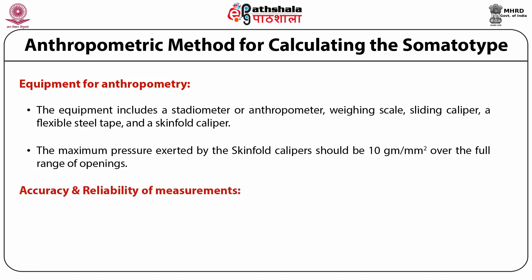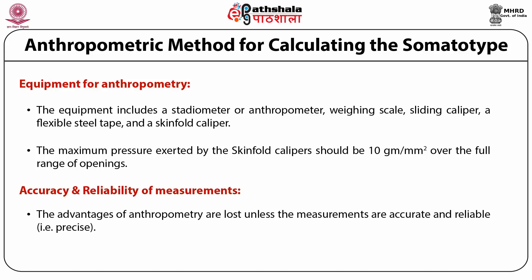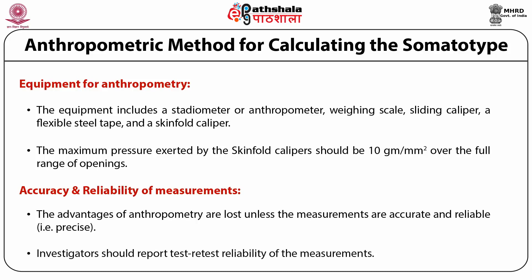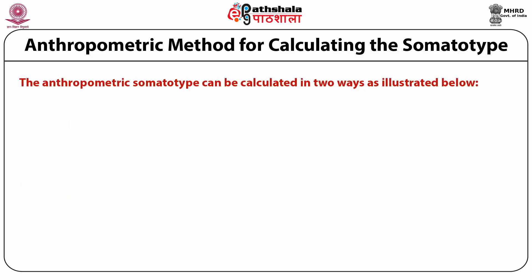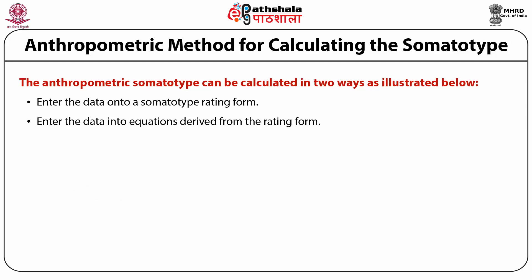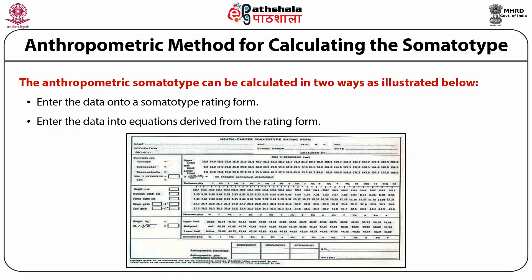Accuracy and reliability of measurements are critical — the advantages of anthropometry are lost unless measurements are accurate and reliable. It is essential to learn precise measurement techniques and accurate calculation. Although calculation of the Heath-Carter anthropometric somatotype is an objective procedure, the validity of the rating depends on the reliability of the measurements used. Investigators should report test-retest reliability. The anthropometric somatotype can be calculated in two ways: entering data onto a somatotype rating form, or entering data into equations derived from the rating forms.